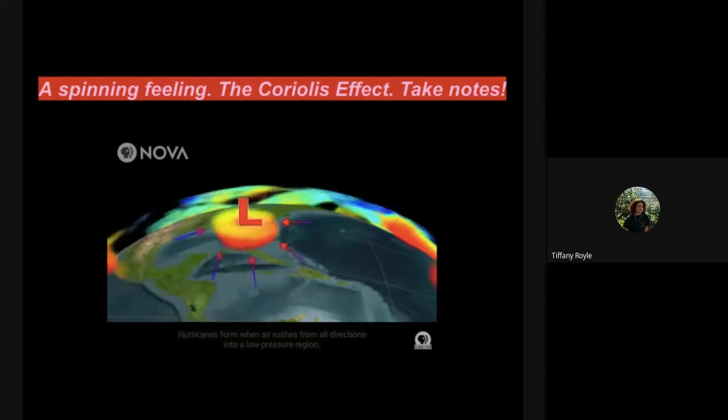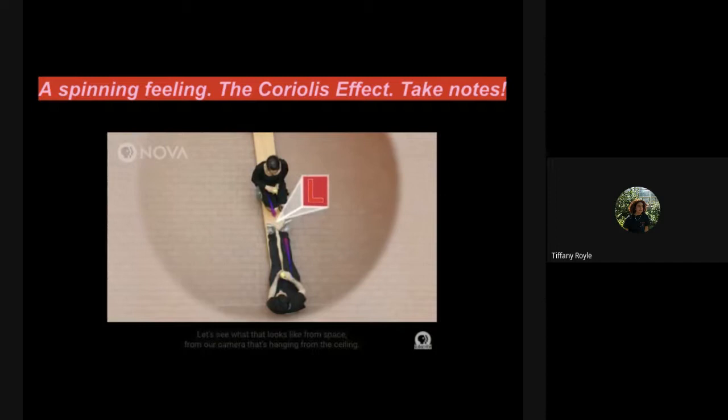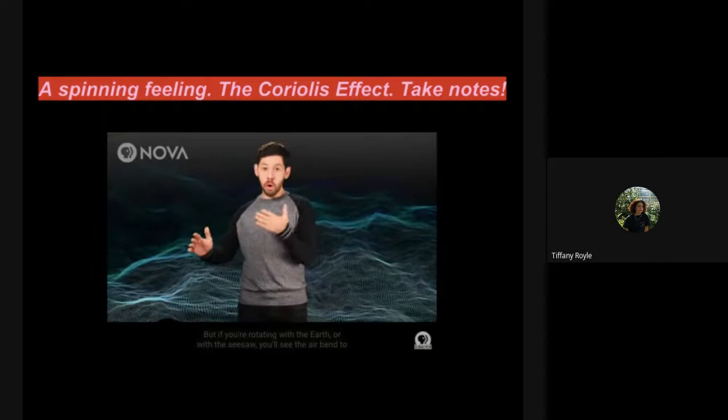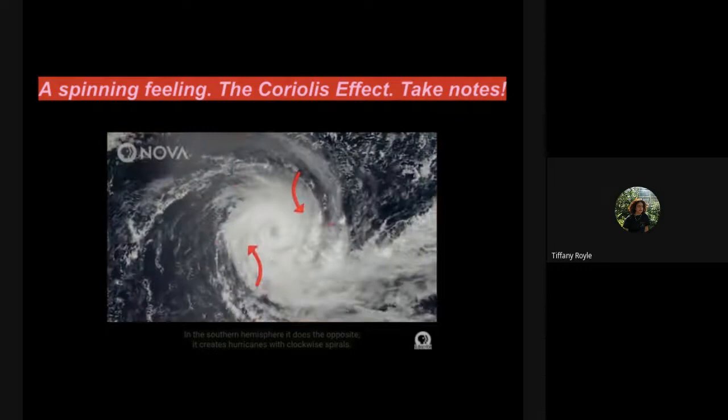So how does the Coriolis effect create hurricanes? Hurricanes form when air rushes from all directions into a low pressure region. So imagine there's a low pressure region between the two of us. Air is going to rush toward the center. Let's see what that looks like from space, from our camera that's hanging from the ceiling. It's not spinning, so the air, or in this case, the balls, are clearly going in a straight line. But if you're rotating with the Earth, or with the seesaw, you'll see the air bend to the right. In the Northern Hemisphere, this creates hurricanes with counterclockwise spirals. In the Southern Hemisphere, it does the opposite. It creates hurricanes with clockwise spirals. This storm on Jupiter, which is actually bigger than the Earth itself, has been spinning for at least 200 years, largely due to the Coriolis effect. So when you're in a rotating frame, the Coriolis effect seems to exert a very real force.